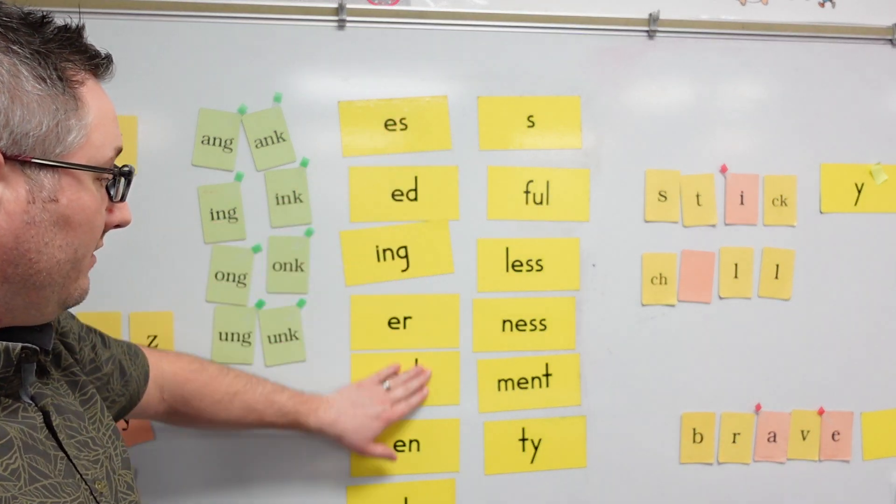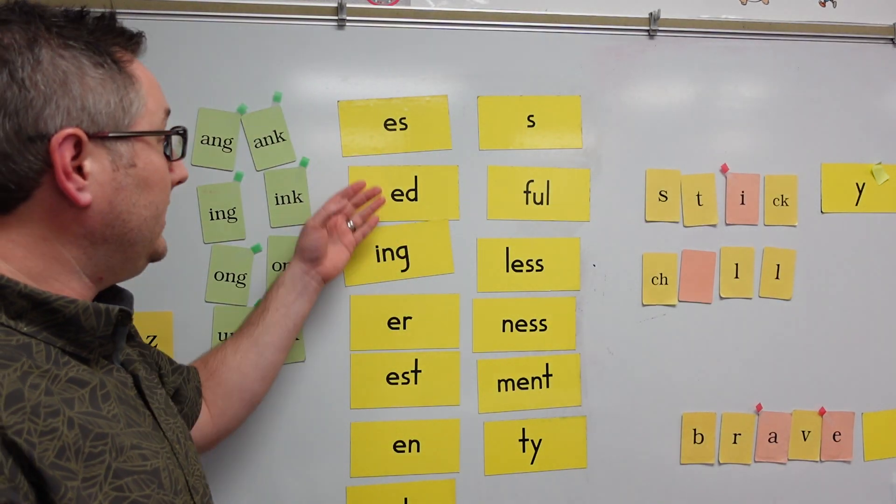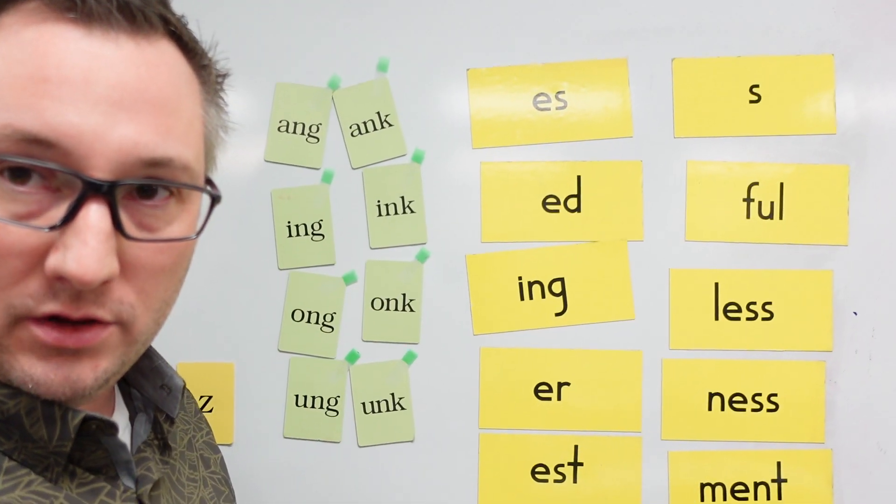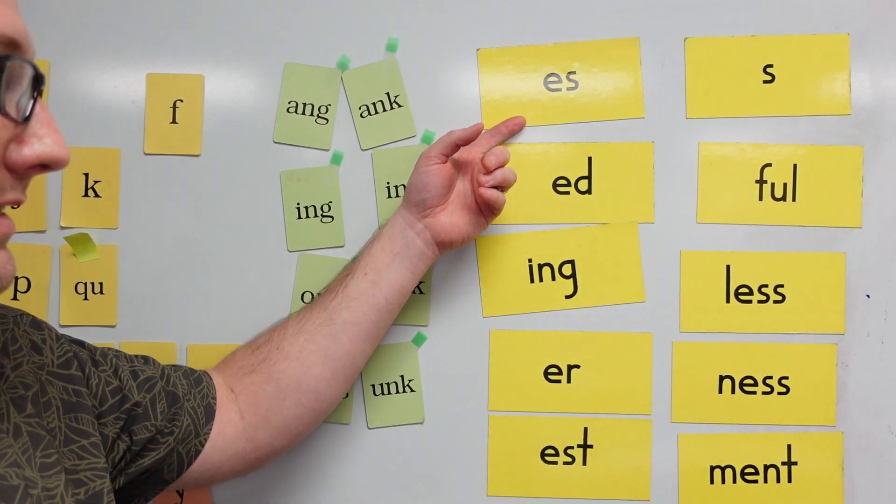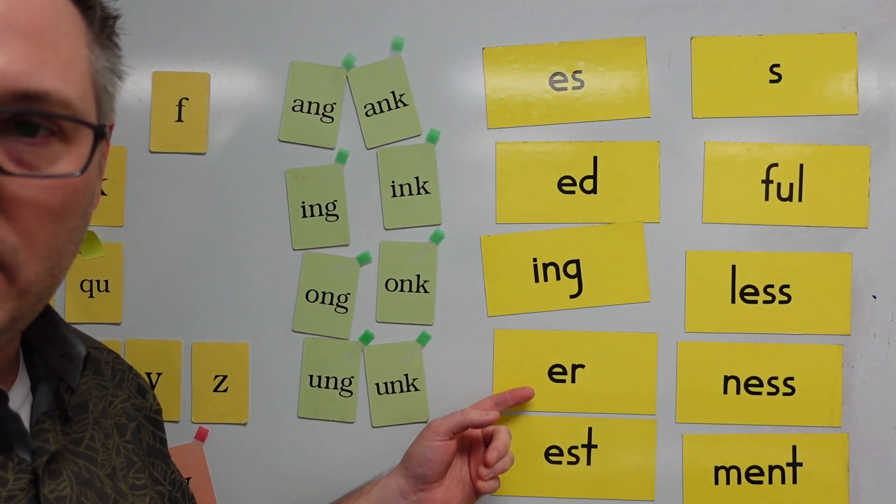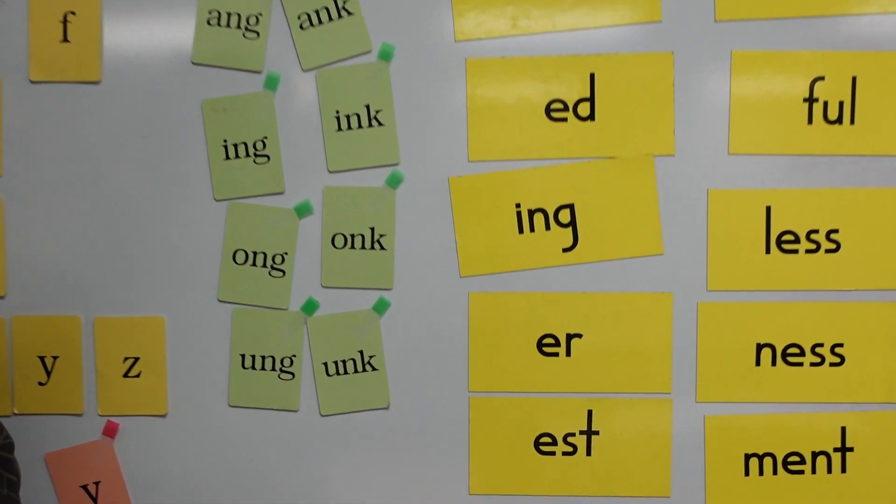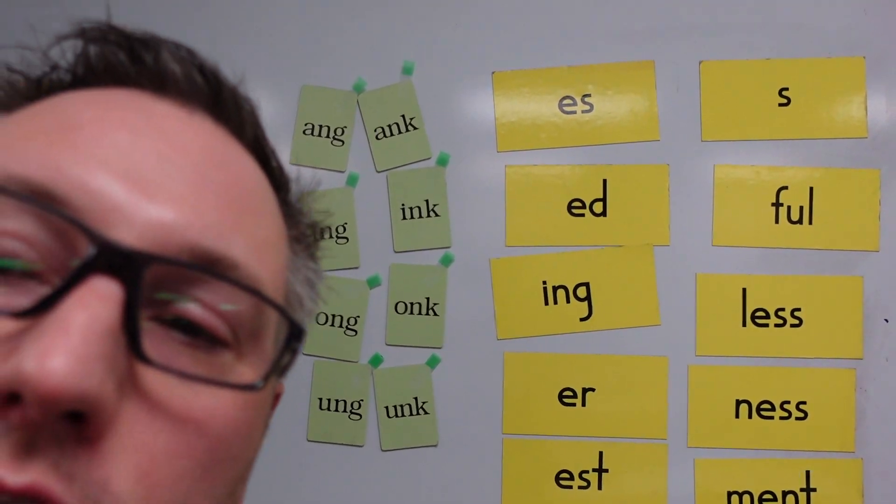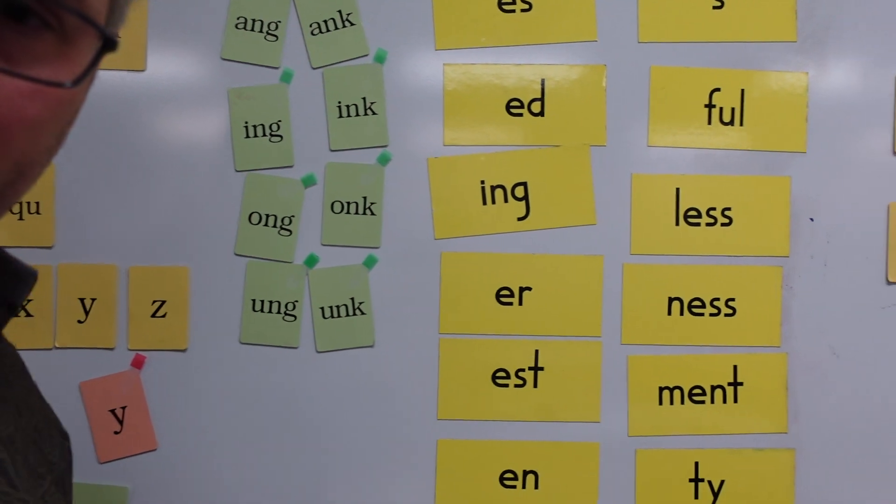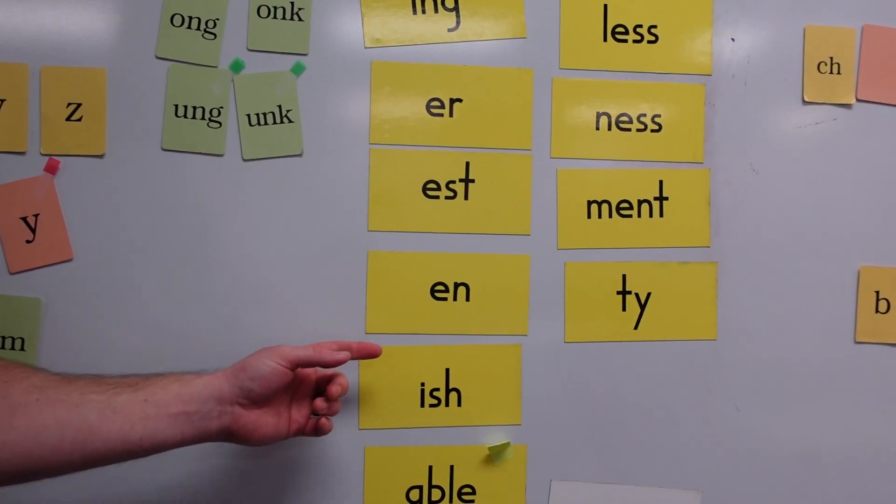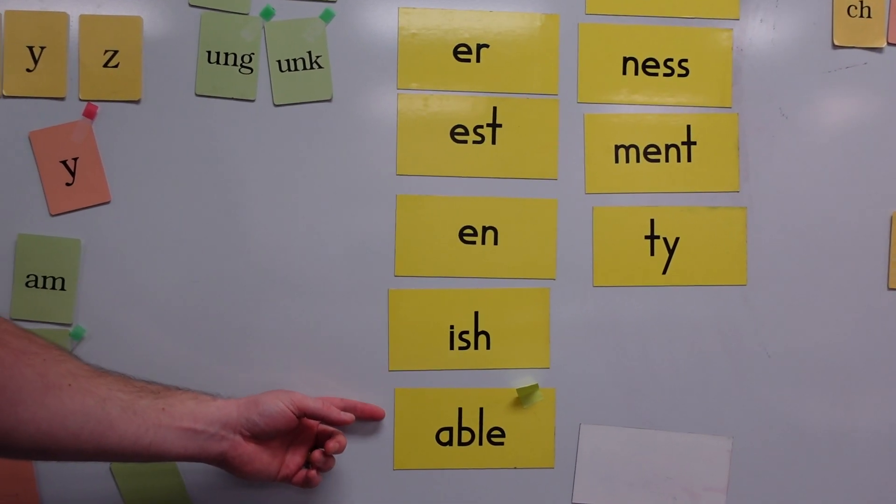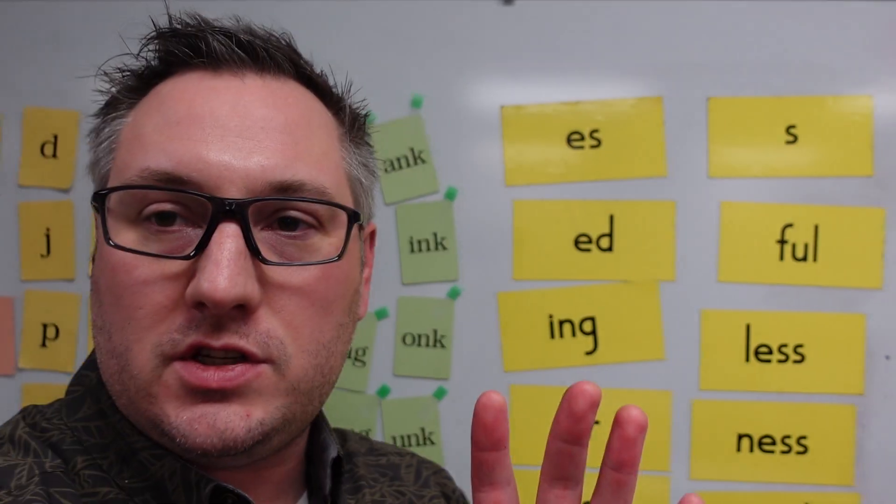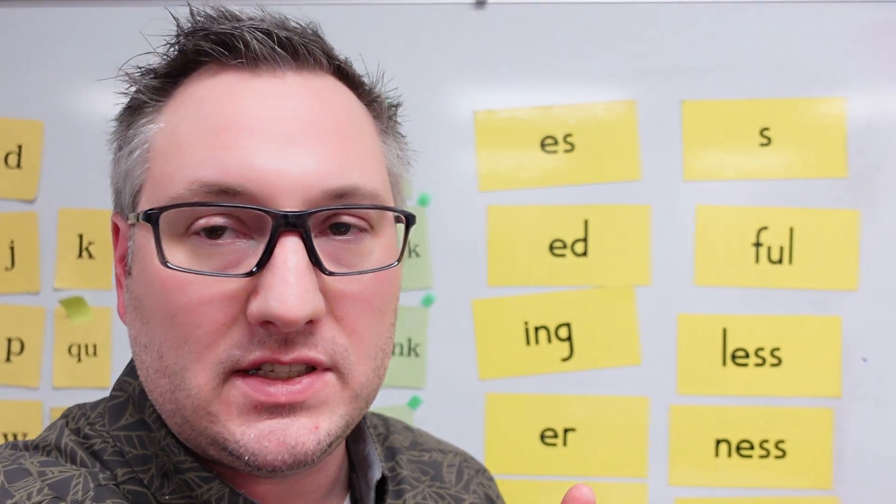We have the vowel suffixes over on this side. That's a suffix that starts with a vowel. I'll move you just a little bit closer. E-S, E-D, I-N-G, E-R, E-S-T, and E. I don't think you can see. I have to drop you down here. We have E-N, I-S-H, and A-B-L-E. All those suffixes start with a vowel, so they're vowel suffixes.